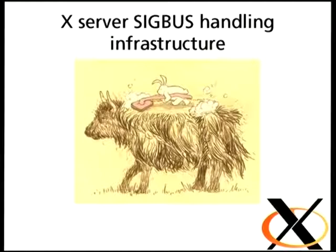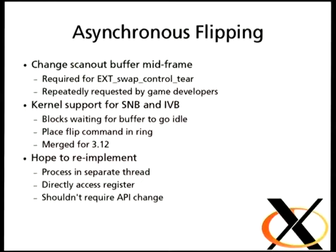So after I got the SIGBUS handler taken care of, my MIT shared memory extension could demonstrate that file descriptor passing was working in Linux, and that I had a new fun utility, and I could move on to the next thing. The next thing I needed to support was a new GL extension called EXT_swap_control_tear.